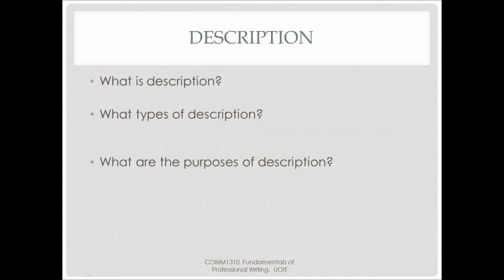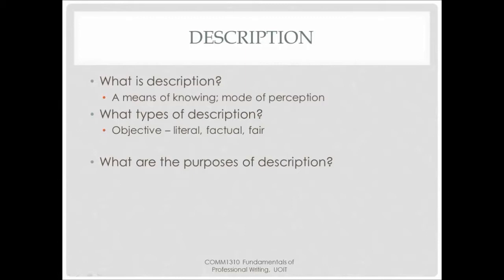A common technique in writing is to use description. Description is a way to communicate to your reader what you are thinking, seeing, or visualizing. It is a mode of perception. In an objective description you are focusing on the facts — the literal, exactly what you see, hear, or what happened. Unlike a narrative, you're not telling a story, but you are describing to the reader something that is important to your argument.